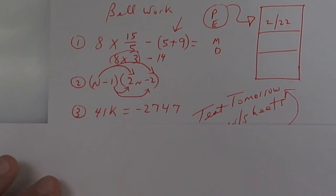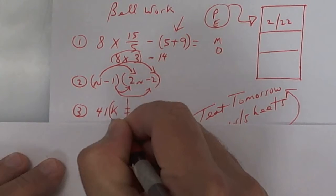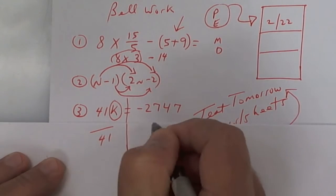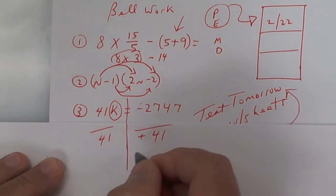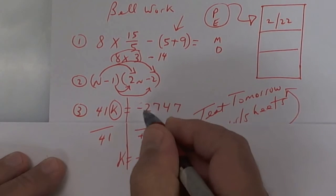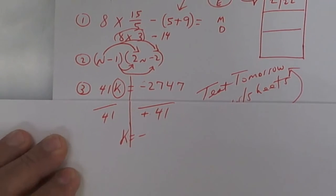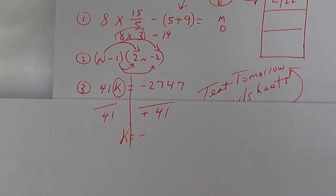The next one, you want to get k by itself. So draw a line, circle the k, divide by 41. See here you have one negative, so your answer is going to be a negative. A negative divided by a positive is going to be a negative. So take 2747 divided by 41 and you get negative 67.